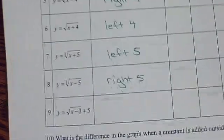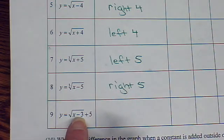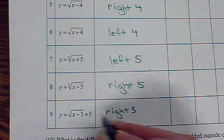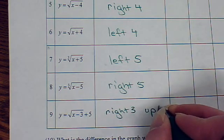And subtracting moves it right. So, I really want you to think about what's going to happen here. If we subtract 3 from the x, it's going to go right 3. And the plus 5 moves it up 5.